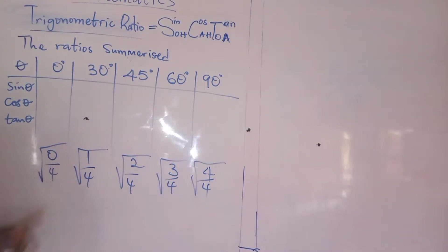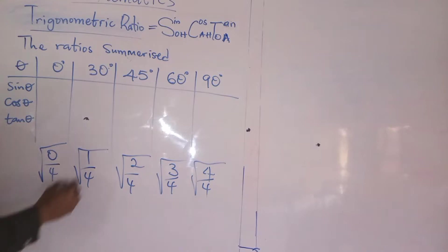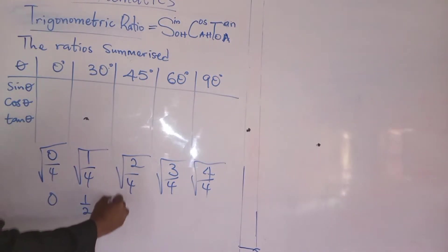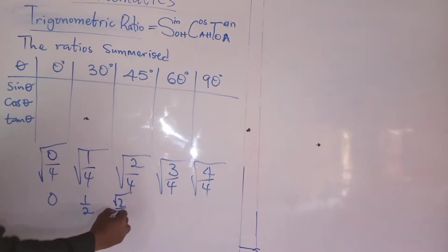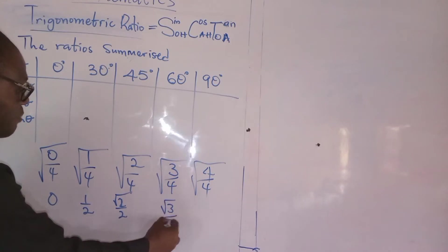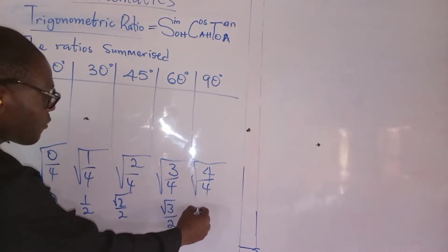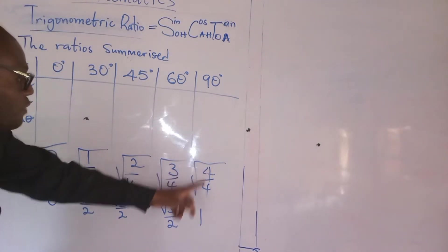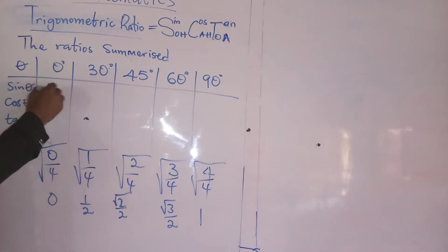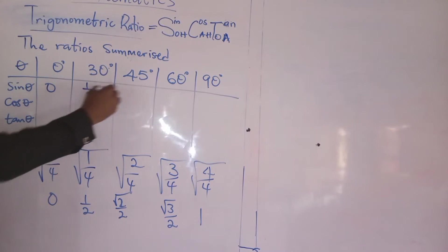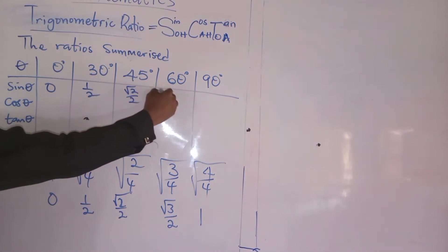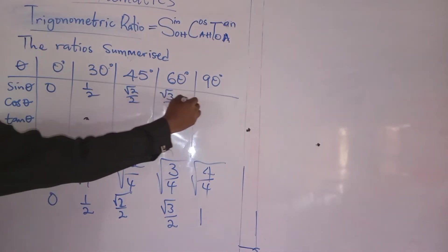Now, what I am going to do is, this is going to give me 0, here is going to give me 1 over 2. Here is going to give me 1 over square root of 2 divided by 2. Here is going to give me square root of 3 divided by 2. Here is going to give me 1, because 4 divided by 4 is 1, and the square root of 1 is 1. So now, I am going to write 0, half, square root of 2 divided by 2, square root of 3 divided by 2, and 1.